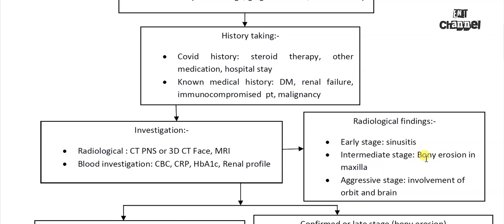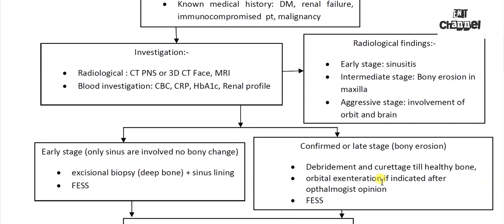With radiological findings like sinusitis — basically if it is close to the orbital wall, the lamina papyracea — when it erodes the bone, these are intermediate stage. When both the orbit and brain are involved, this is a very aggressive presentation. So you have to define whether it's the early stage or the advanced stage.